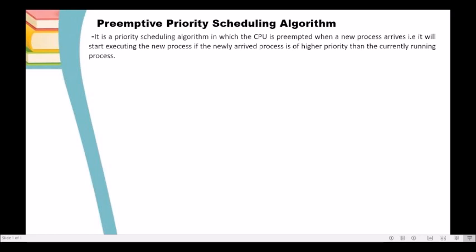In the following example, the lesser the given priority number would mean the higher the priority. In case there are two or more processes having the same priority, to be able to break the tie, we are going to apply the concept of first come first serve to the processes having the same priority.